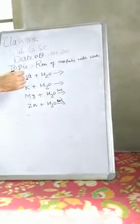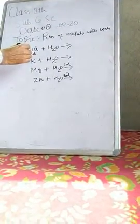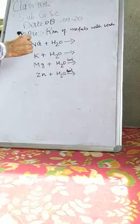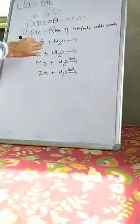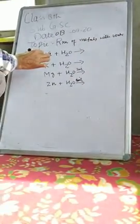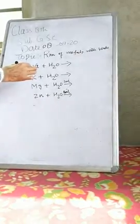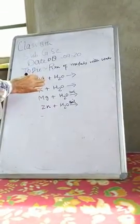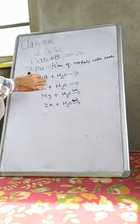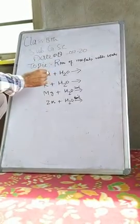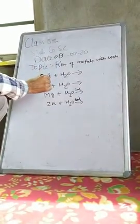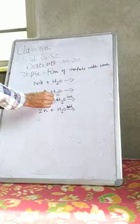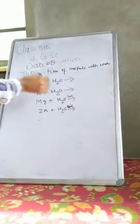As I have taught you in the previous topic, we have different metals in science. There are some metals called active metals, and there are some less active metals. If we talk about active metals, for example: sodium plus water, potassium plus water, magnesium plus water, zinc plus water.